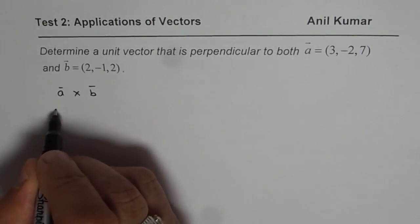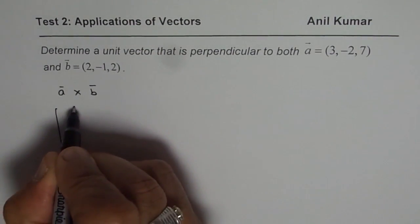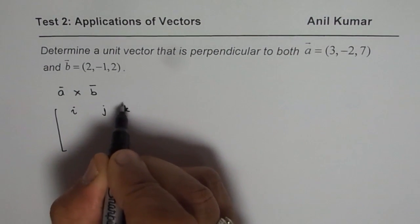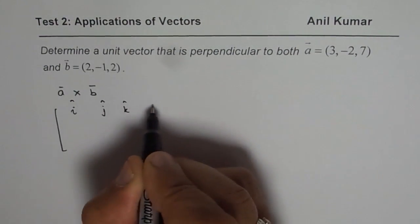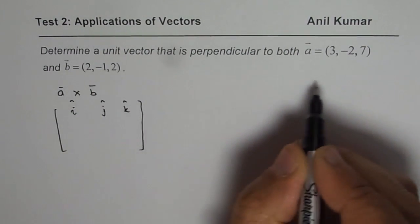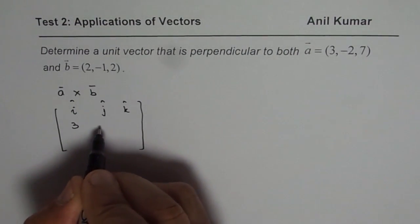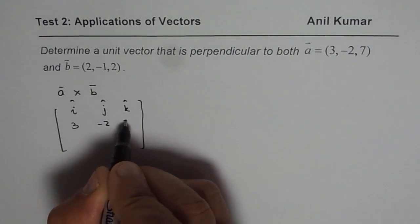So let us do a cross b, which is, we can use our method of matrix i, j, k. You can follow the method which you have learned at school. There are different ways where everybody is doing cross product. I prefer this particular method.